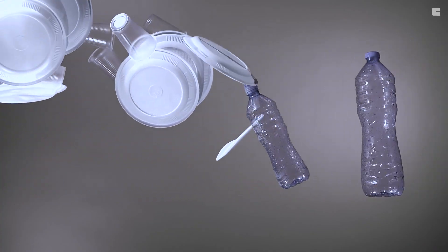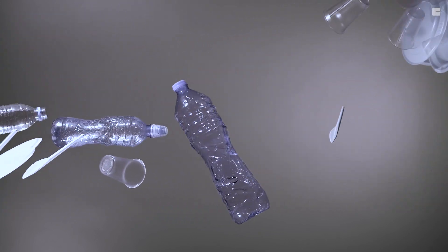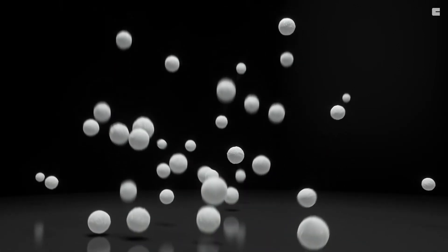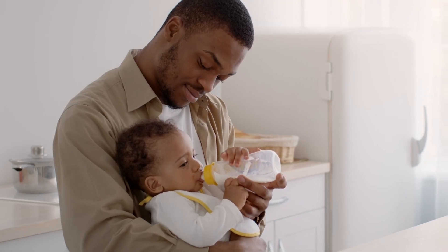While we can't do without these everyday products, we can do without the phthalates they contain. Our new Polymax 600 Series Catalysts are completely free of phthalates, thus allowing the production of polypropylene plastic that is safer for people.